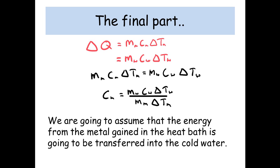And then we can just rearrange our formula to find the specific heat capacity of the metal because it's the only thing we don't know.